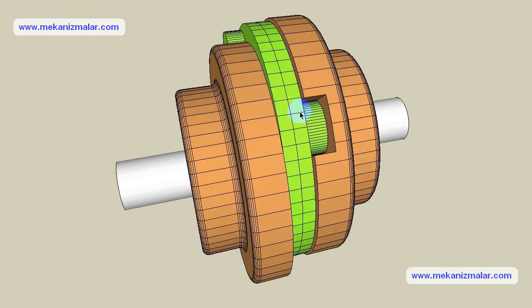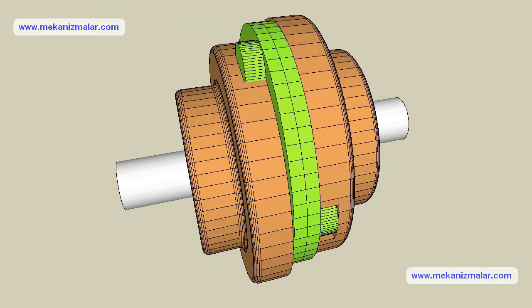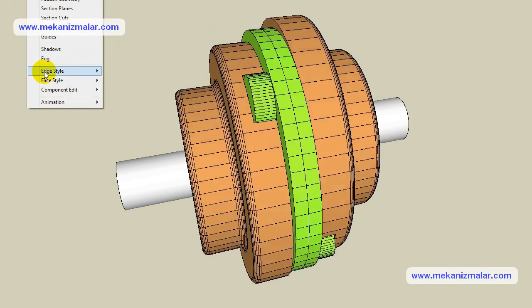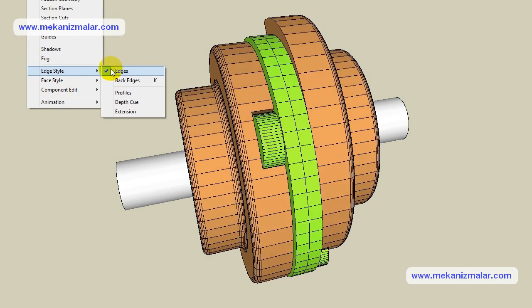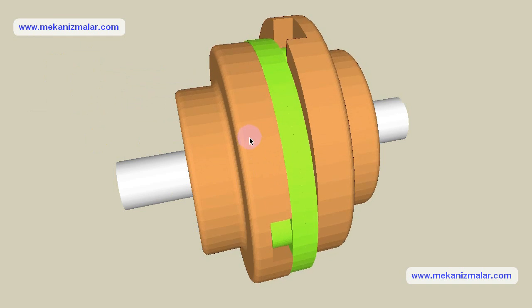On the center disc, mating tongues are located on opposite sides and oriented 90 degrees apart. Drive grooves are located on the hubs. The tongues of the center disc are fitted to the grooves with small tolerance to prevent backlash.